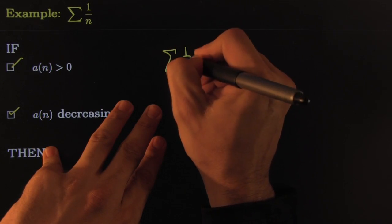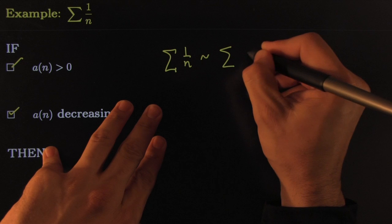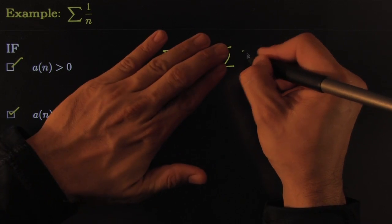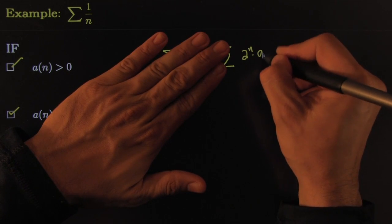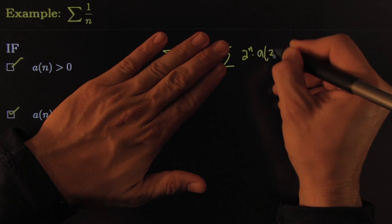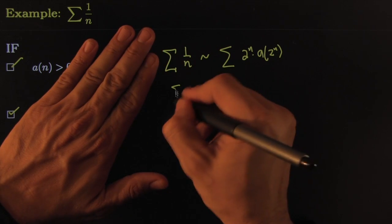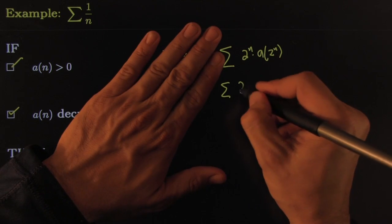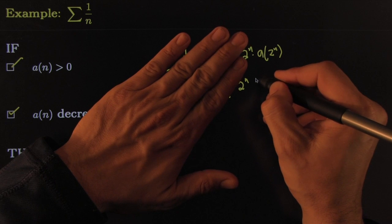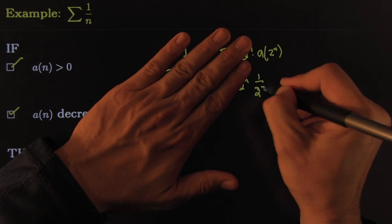1 over n behaves just like - what you're going to do is 2 to the n times a of 2 to the n. What that means is 1 over n behaves just like 2 to the n times 1 over 2 to the n, because a of n is 1 over n.